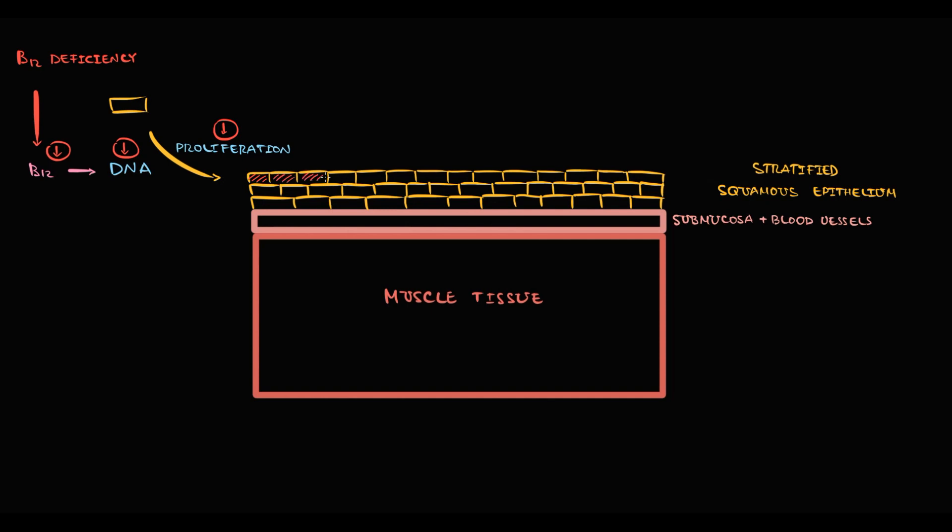Basically we cannot produce an adequate amount of new epithelial cells. This creates a huge problem because if all epithelial cells are damaged, we cannot replace them with new ones. So with time, the epithelial layer becomes thinner and thinner, and exactly this state we call diffuse atrophy of epithelium, including lingual papillae.